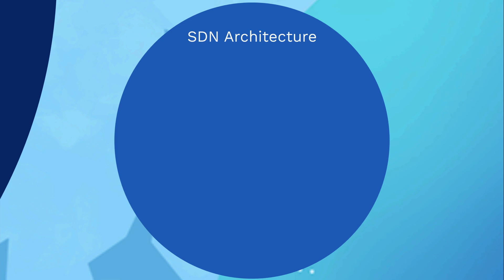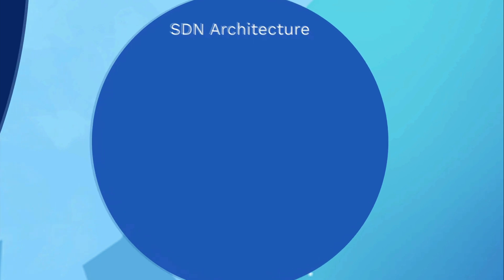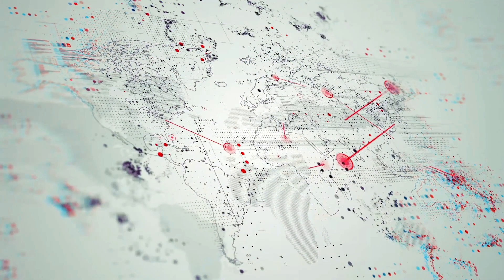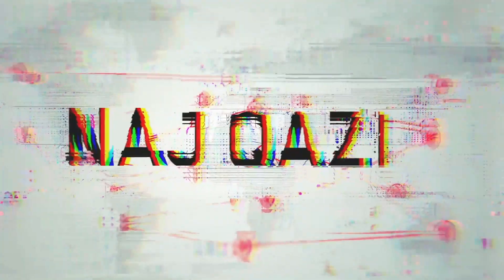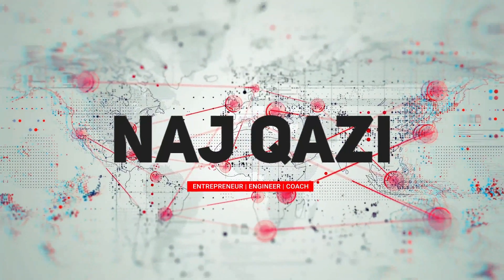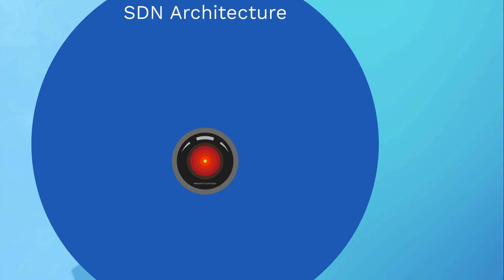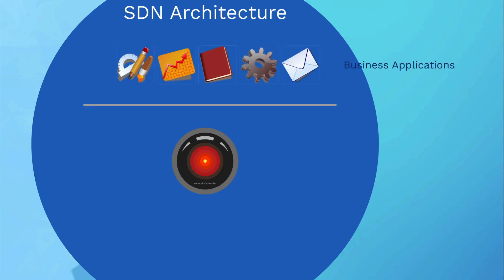Let's look into SDN architecture. At the heart of it all, we've got a network controller. On top of the network controller are business applications and different network services that the business runs.